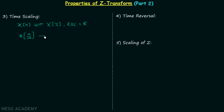For the new signal, there will be a new Z transform. The new Z transform is equal to the old Z transform, but in place of Z we will have Z raised to the power m. So the new Z transform is X(z^m), and the region of convergence will become R^(1/m), where m is the amount by which we have performed the time expansion.